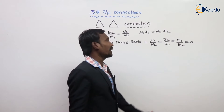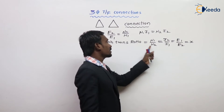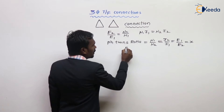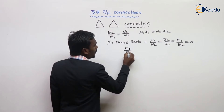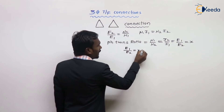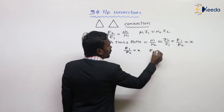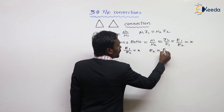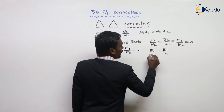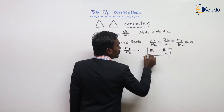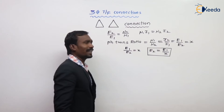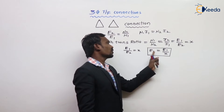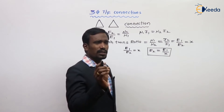Transformation ratio is different; phase turns ratio is different. From this, E1 upon E2 equals X, so E2 equals E1 upon X. This is the phase turns ratio formula — just remember that.